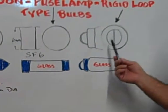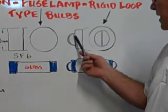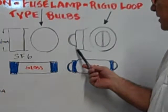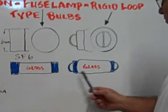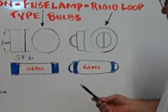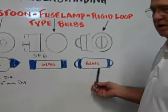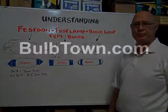The last one is the Rigid Loop. It has a wire loop that comes out at either end, and in the center of course is the glass tube.